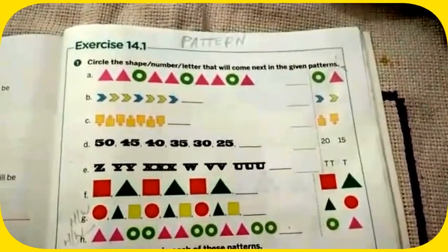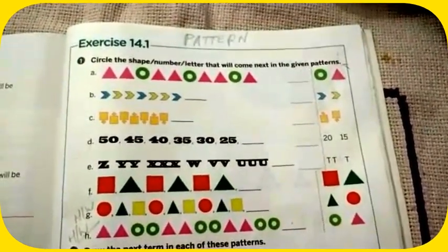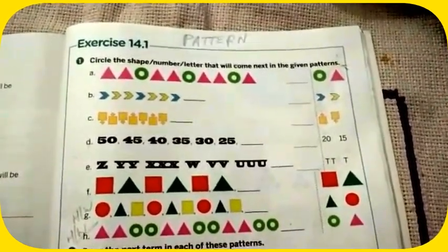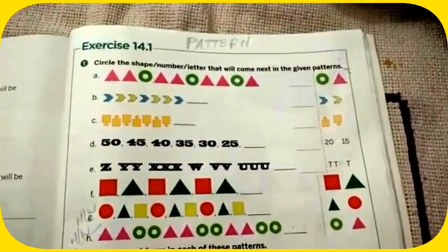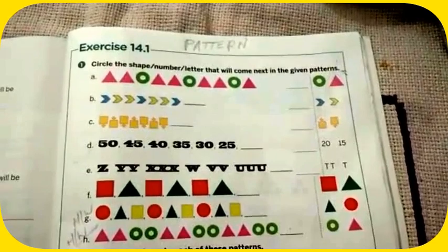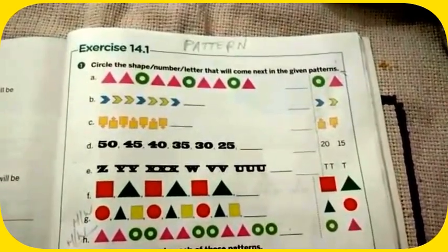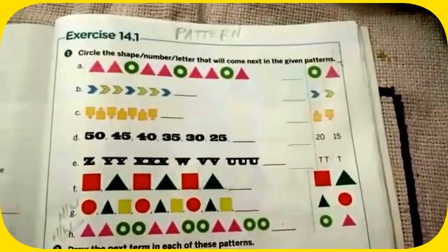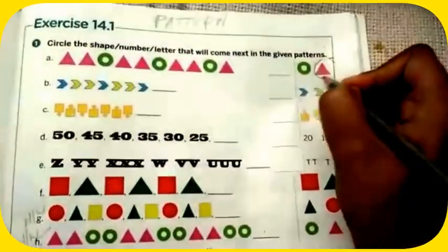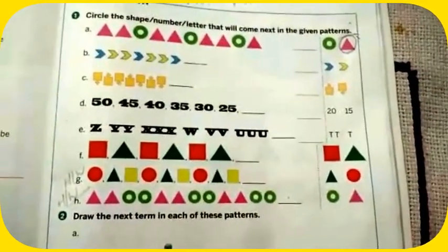First, question number one: circle the shape or number or letter that will come next in the given pattern. Part a: you see two pink triangles, then green, two pink triangles, then green, two pink triangles, then green, then pink triangle. That means next will come pink triangle. Give a circle mark here.